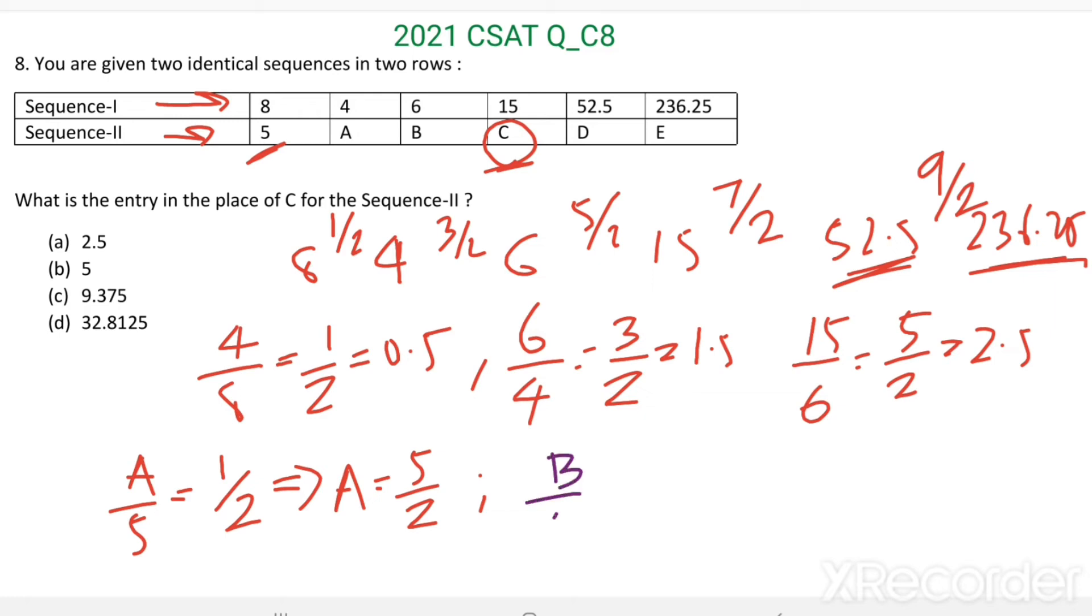Then B divided by A equals 3/2. From here, B equals A times 3/2. A equals 5/2, and 5/2 times 3/2, we get 15 divided by 4.